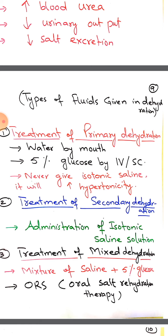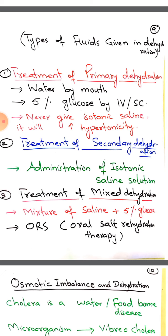Secondary dehydration is due to loss of salt and is treated by isotonic saline solution. Treatment of mixed dehydration uses a mixture of saline plus 5% glucose — that is ORS (oral rehydration salt therapy), formed by 20g sugar, 4g NaCl, 1.5g KCl, 3g sodium citrate dissolved in one liter of water.